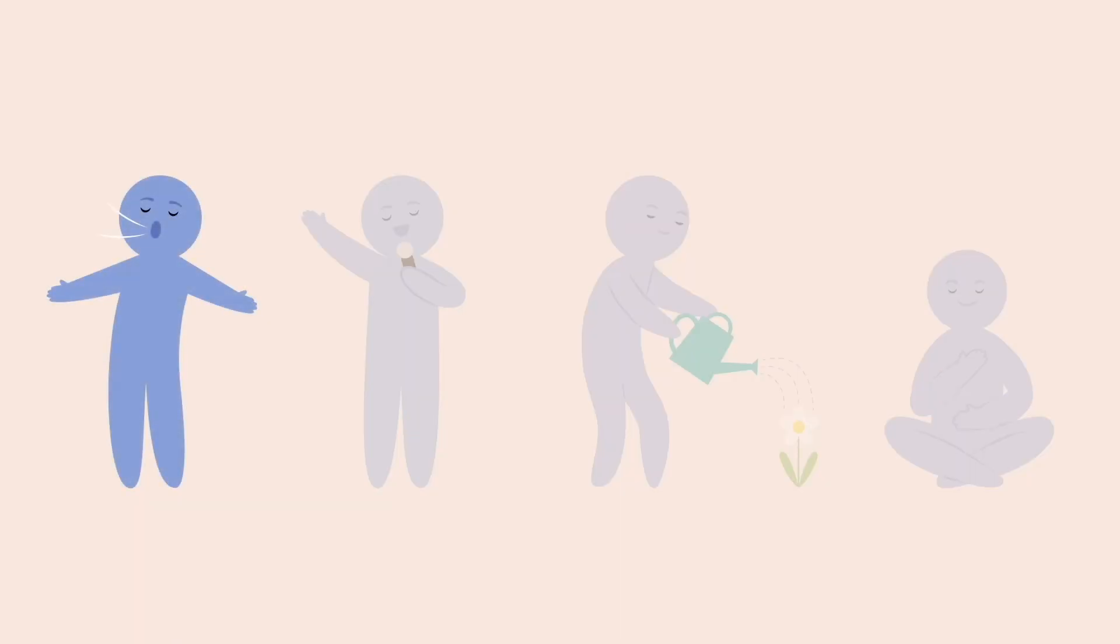One, slow breathing, especially long exhales that signal your body is safe. Two, humming, chanting, or singing, which stimulate the vagus nerve through vibrations from your vocal cords. Three, mindful presence, like noticing your surroundings, grounding yourself with sensory cues, or connecting with someone you feel safe with.